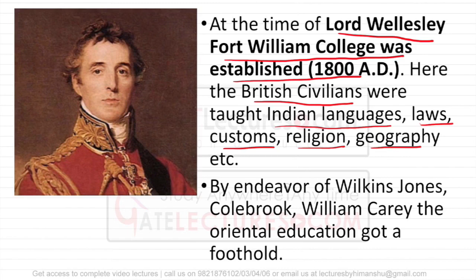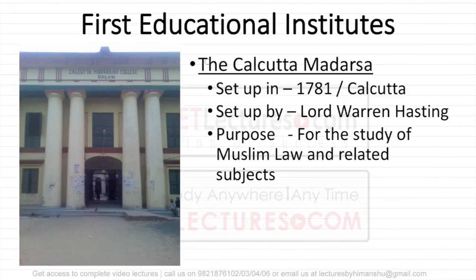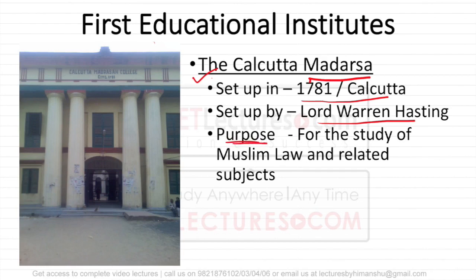By the endeavour of Wilkins, Jones, Colebrook, and William Carey, the Oriental Education got a foothold. The first education institute established in India was the Calcutta Madarsa. These people wanted to know the Indian traditional teaching form mixed with Western education, so it was started at Calcutta and named the Calcutta Madarsa. It was established in 1781 in Calcutta by Lord Warren Hastings. The basic purpose was the study of Muslim laws and related subjects, so that they could deal with the Muslim community.